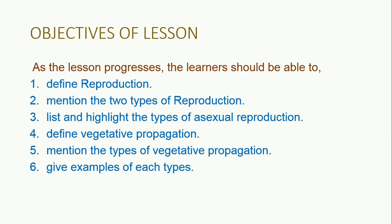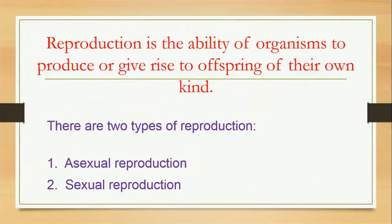What is reproduction? Reproduction is the ability of organisms to produce or give rise to offspring of their own kind. Offspring of their own kind means offspring of the same species as the parent organism. For example, mango plants reproduce mango plants, man reproduces man, and dogs reproduce dogs — organisms of the same species.